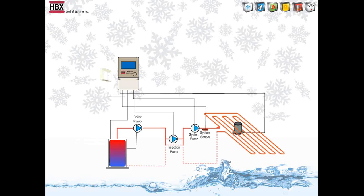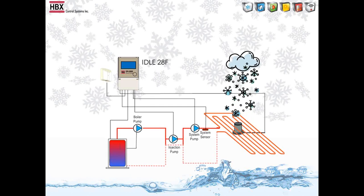To take it a step further, you will set up your control to an idle temperature. In this example we have 28 degrees. When it starts to snow, this is where you want your system to turn on and go into melt. So from here, we get out of idle and into melt. In this example, it's set for 50 degrees and we will melt the slab out of the snow zone.